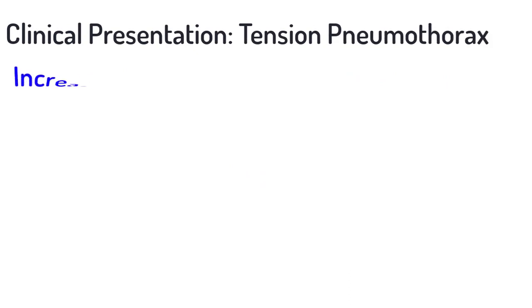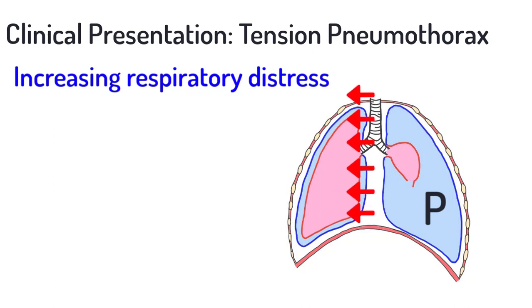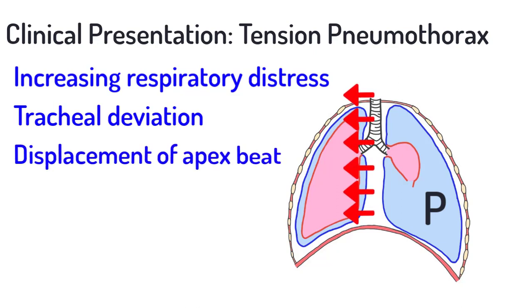The presentation of tension pneumothorax is much more dramatic. The patient will present with increasing respiratory distress. The accumulation of pressure on one side of the thorax will cause mediastinal structures to shift away from the collapsed lung, evidenced by tracheal deviation and displacement of the apex beat. Impending hemodynamic collapse will be indicated by tachycardia and distention of neck veins.